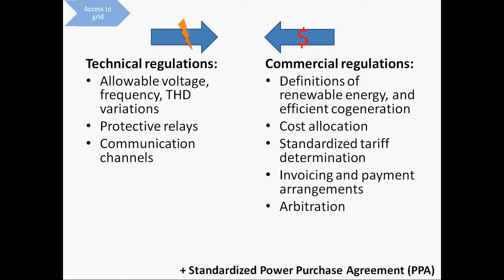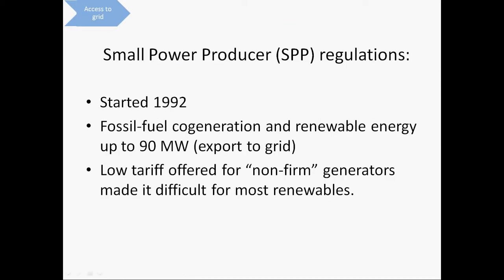The first opportunities for renewable energy in Thailand happened in 1992 when the government initiated the Small Power Producer program, allowing private sector participation in cogeneration and renewable energy. Small in this context meant up to 90 megawatts. Unfortunately, the SPP program had a number of bureaucratic barriers, so only power plants of 10 megawatts or larger generally bothered to apply. The tariff offered for non-firm generation was only about a third of that for firm generation, making it very difficult for all but a few renewable energy plants to participate profitably.